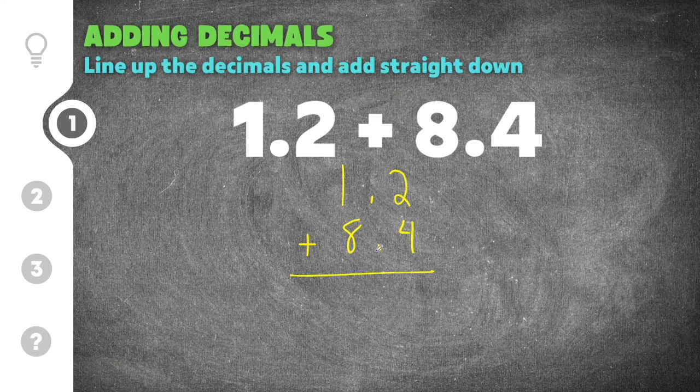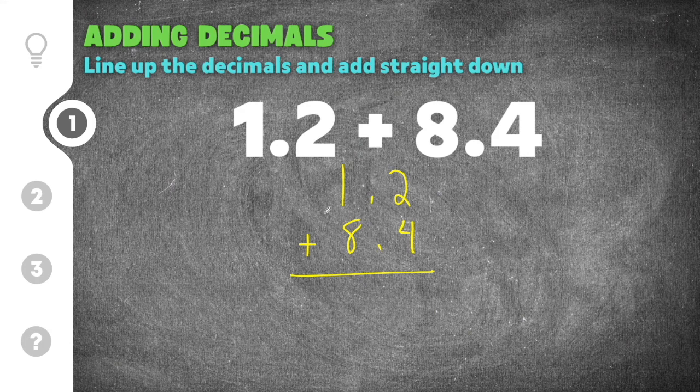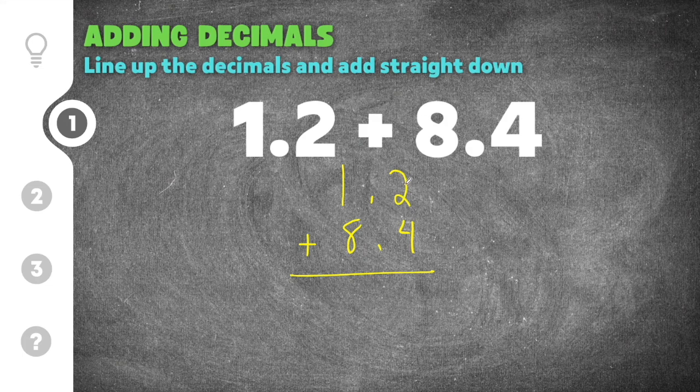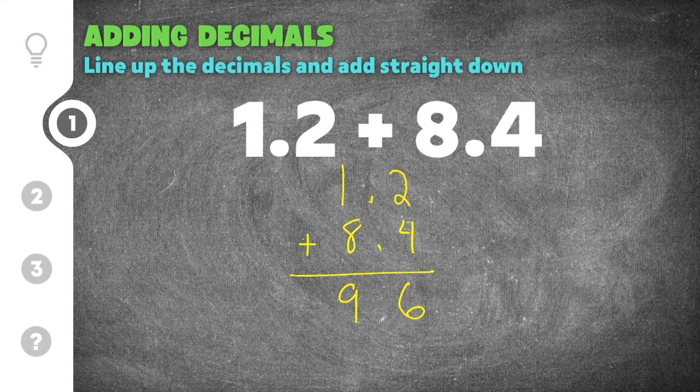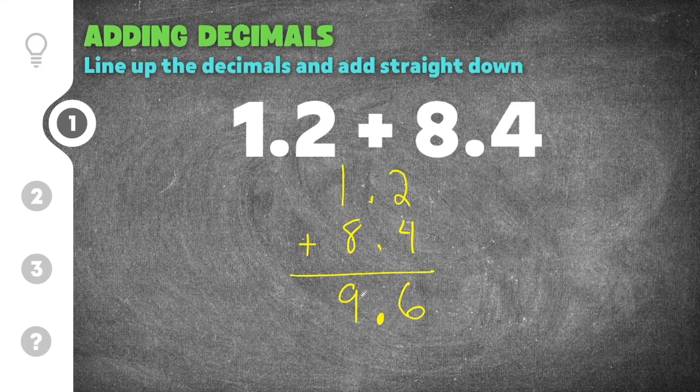Now that the decimal points have been lined up, we can go ahead and add these together just like we normally would. So starting from the right, I'm going to say 2 plus 4, and that's going to be 6, and then 1 plus 8, and that's going to be 9. Now we have to place the decimal point in our answer, and the way we do that is we just move the decimal point directly down. So it moves straight to the answer and when you do that you will get 9.6 as your answer for this problem.